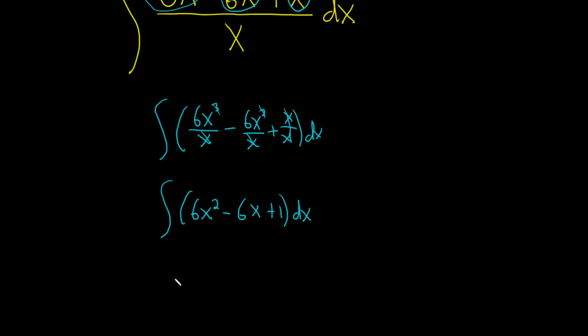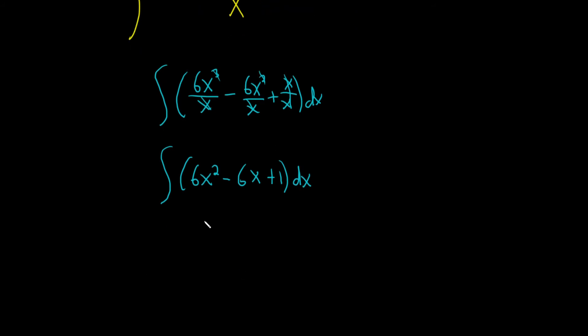Okay, now we can go ahead and integrate. So now we're going to use the power rule for integration. So now we'll actually drop the integral sign. So this is 6x, and what we do with the power rule is you take this number and you add 1. So 2 plus 1 is 3, then you just divide by that.